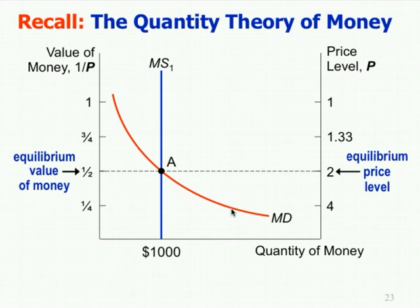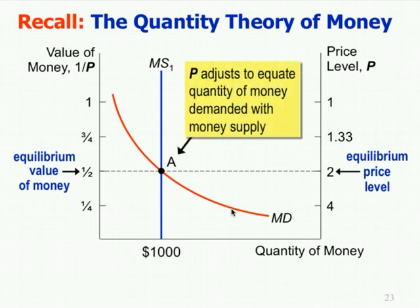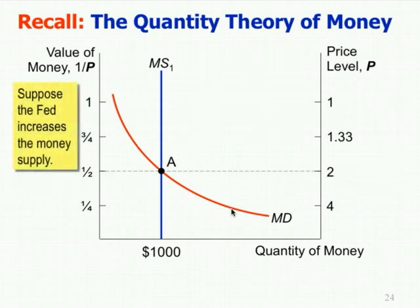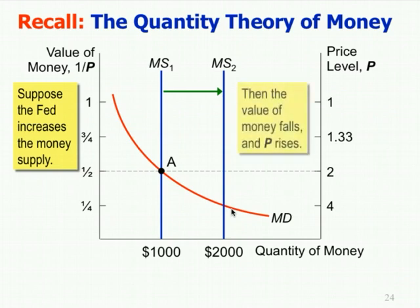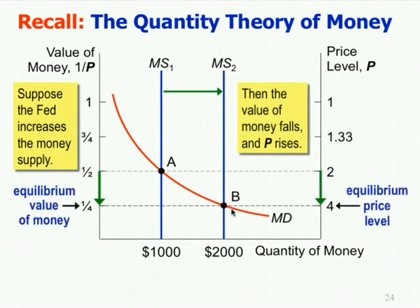Price adjusts in the long run to equate the quantity of money demanded with money supply. So the primary impact of changes in money supply in the long run is manifesting itself in prices. Increase money supply, increase prices. For example, suppose the Fed increases the money supply — shifts money supply to the right — which lowers the equilibrium value of money but at the same time raises the price level. That was the quantity theory of money: increases in money supply increase the price level.